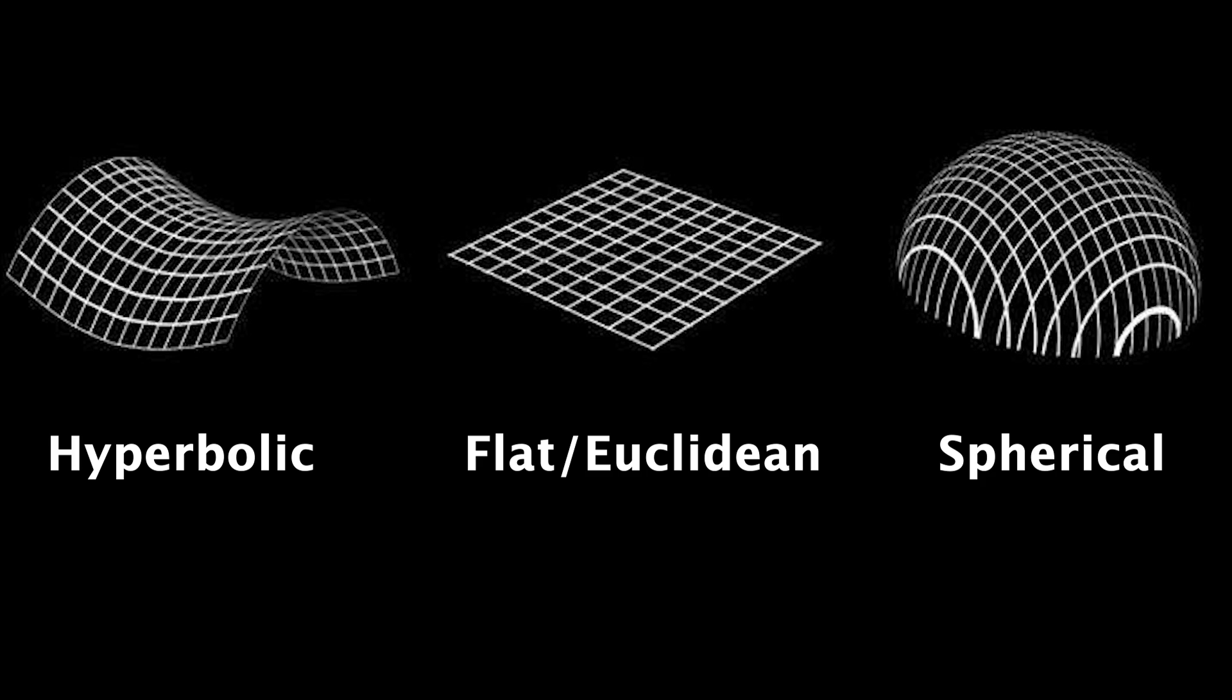Why just these three? Because these shapes have the same curvature everywhere. The flat, or Euclidean space, has zero curvature everywhere. Then the sphere has the same positive curvature everywhere. And the hyperbolic space has the same negative curvature everywhere.